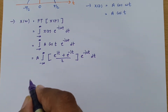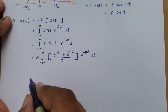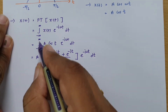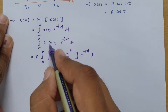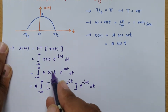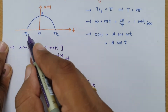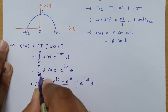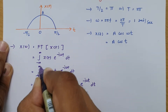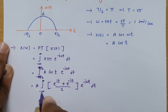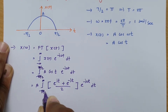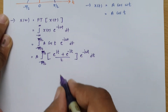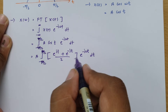One more thing to observe: the cosine limits are happening between minus π/2 and plus π/2. So instead of minus infinity, we should write the limits as minus π/2 to plus π/2, and now we carry out this integration.